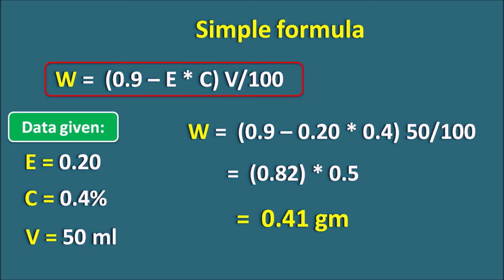Using this simple formula, we can directly calculate the amount of Sodium Chloride required to produce isotonicity for any given data — whether the volume is 100 ml, 50 ml, 60 ml, or any other volume. That's about the Sodium Chloride Equivalent Method. If you like this video, please subscribe to our channel and share it with your friends. Thank you for watching.